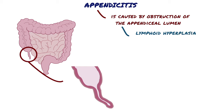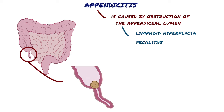Lymphoid follicles are dense collections of lymphocytes that get to their maximum size in the appendix during adolescence. Sometimes this growth can literally obstruct the tube. Another cause of obstruction is fecalates, a hardened lump of fecal matter that finds its way into the lumen of the appendix and wedges itself there. Parasites or, more rarely, foreign bodies and neoplasms can cause obstruction as well.